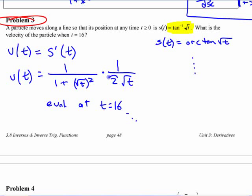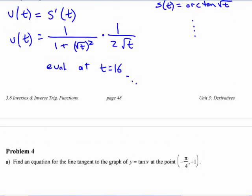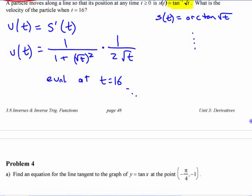And root of t to the negative half wayward. Well, you need this in here, though. You need the 2 in there. I mean, if you simplify this, you get 1 over 2 root t 1 plus t. And evaluated at 16, and it's all good.